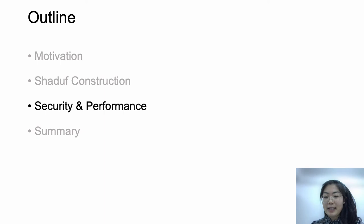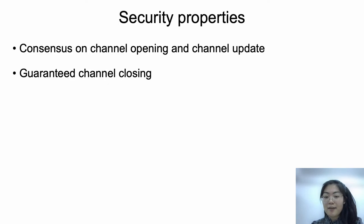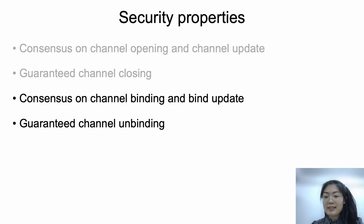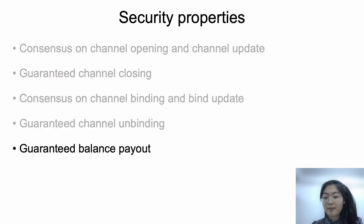The security properties we aim to achieve include 5 aspects. Firstly, the channel construction should remain secure, which means that both channel users achieve consensus on the channel opening and update, and the channel closing could be initiated by either user and finished in a bounded time. Similarly, for the coin shift related procedures, the three users in the channels should always achieve consensus on the binding and bind state update. The channel unbinding could be initiated by any of the three users and finished in a bounded time. Moreover, users are guaranteed to get the desired coins after the channel state or bind state is confirmed by related users. We provide a formal proof in the paper.